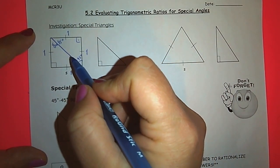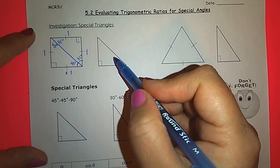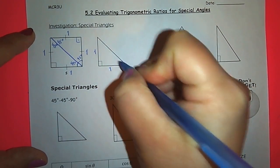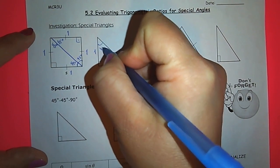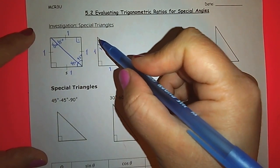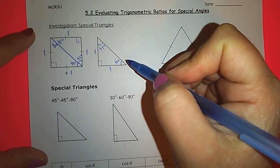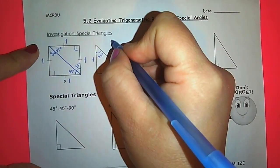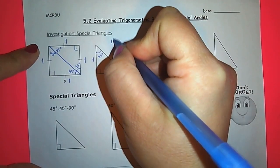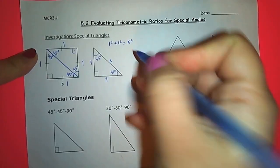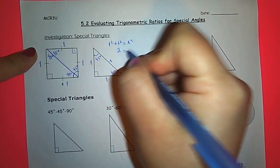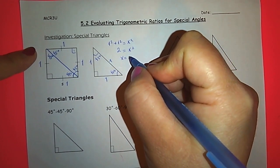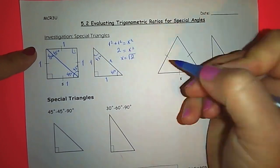Now I'm going to take one of those right angle triangles to work with. So the side lengths are one and one, and the angles are 45 degree and 45 degree. The only unknown side here is the hypotenuse of this right angle triangle. We can use Pythagoras to calculate it. Let me call this x. So we get one squared plus one squared equals x squared, which gives us 2 equals x squared. Taking the square root of both sides — since x is a side length it cannot be negative — we get positive square root of 2.